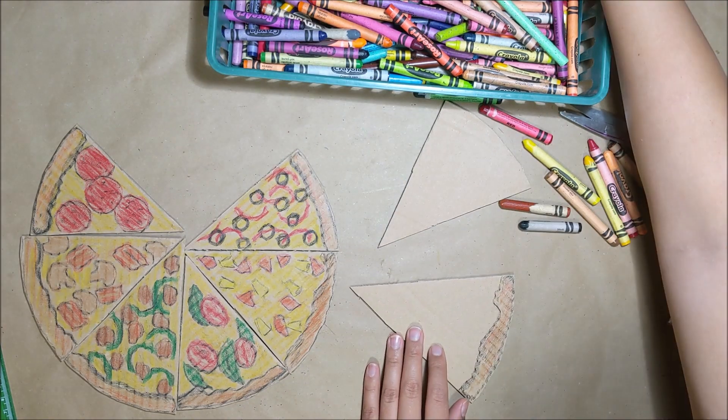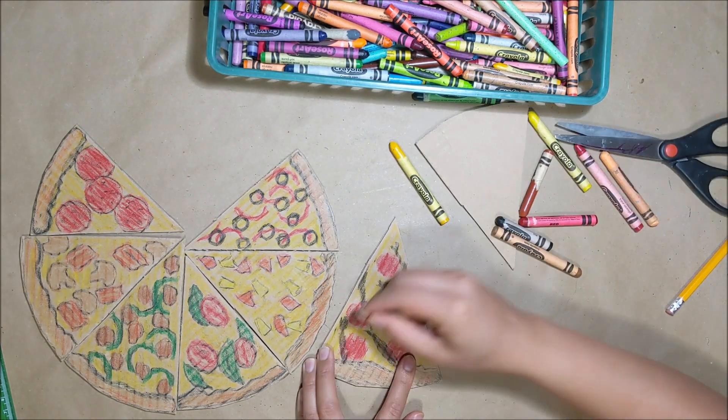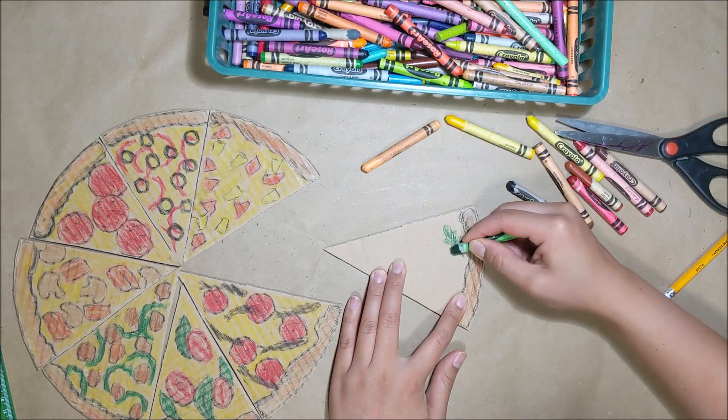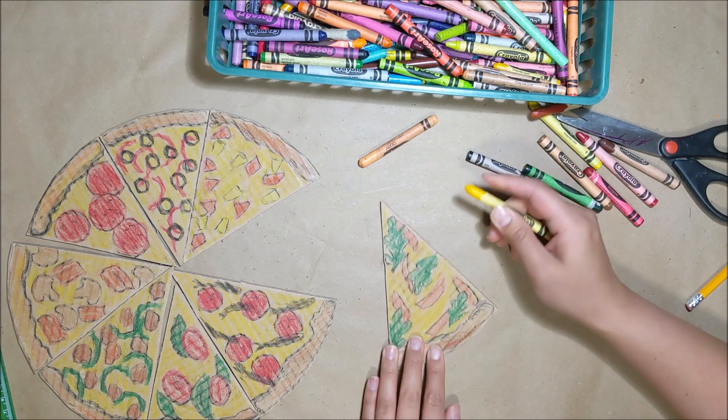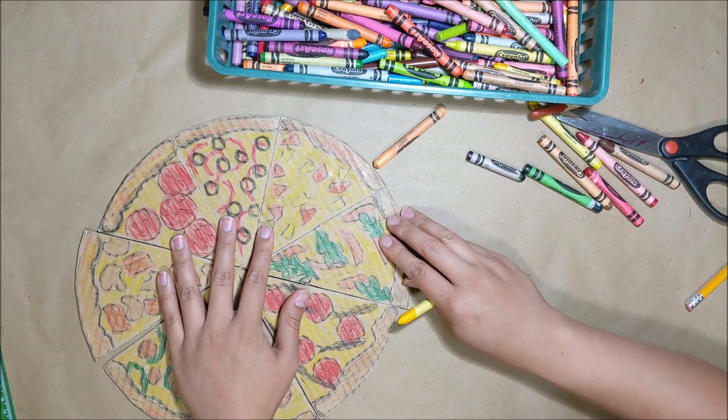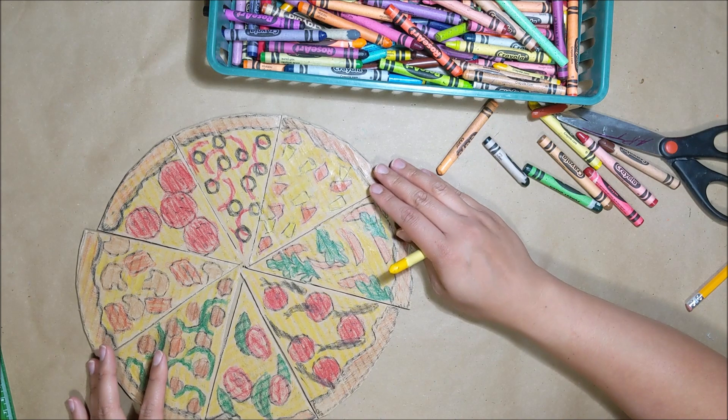This one is red bell peppers and olives. This one is pepperoni and anchovies. I've never had anchovies on my pizza. Let me know if you like it. My last slice is arugula and prosciutto. And with that I have my full pizza each slice with different types of toppings.